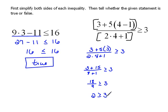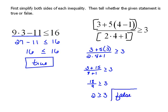Now we can tell whether this statement is true or false. On the left-hand side, the 2 — is that greater than 3? No, it's not. 2 is actually smaller than 3. And is 2 equal to 3? No, 2 is not equal to 3. So both of those are false — it's not greater than and it's not equal to. So this entire thing is a false statement.